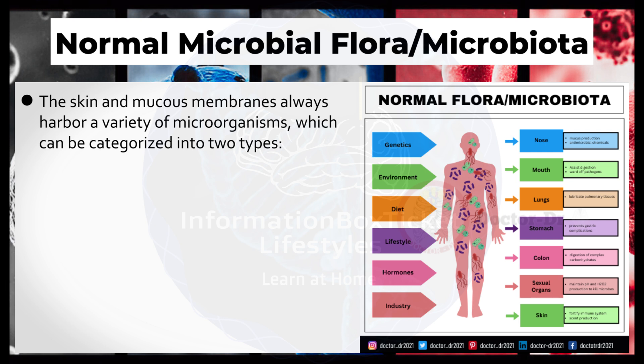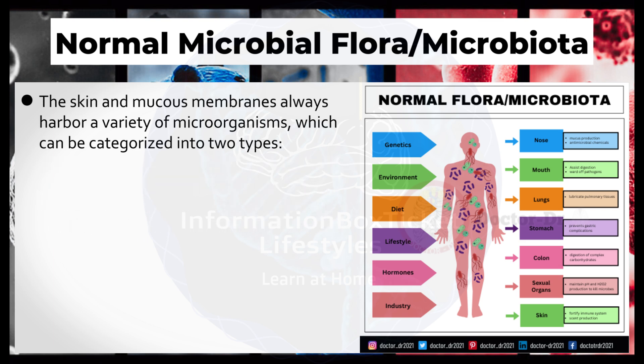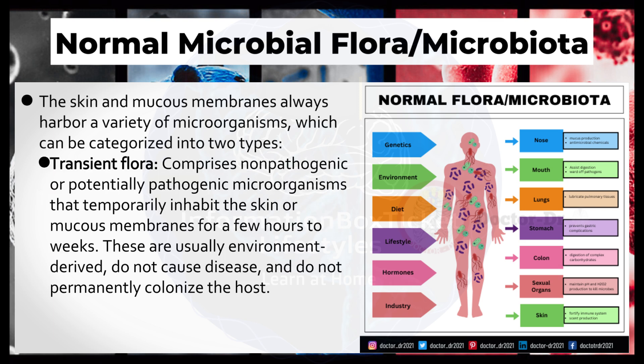The skin and mucous membranes always harbor a variety of microorganisms, which can be categorized into two types. Resident flora consists of relatively stable and consistent microorganisms regularly found in a particular area at a certain age; if disrupted, it tends to reestablish quickly. Transient flora comprises non-pathogenic or potentially pathogenic microorganisms that temporarily inhabit the skin or mucous membranes for a few hours to weeks, are usually environment-derived, do not cause disease, and do not permanently colonize the host.